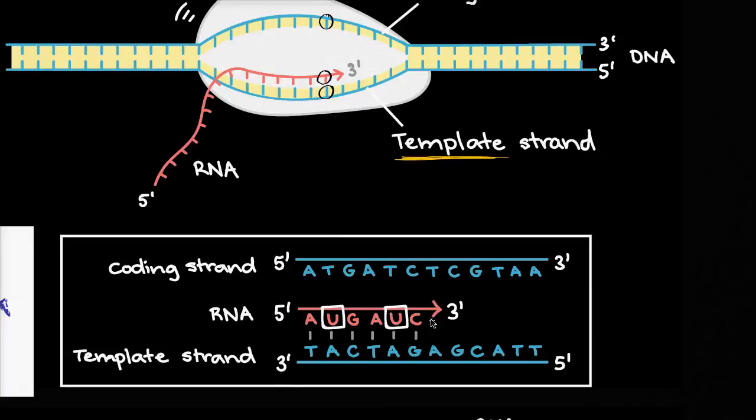with the one difference, is that you won't find the thymine in the RNA, instead you'll find a similar nitrogenous base, and that is uracil. But uracil plays the role of thymine, so you're essentially coding the same information.